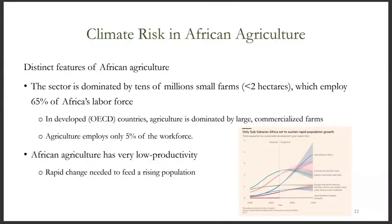Africa's agricultural sector stands out from agriculture in other parts of the world in a number of ways. First, agriculture in Africa is dominated by tens of millions of small farms, which employ 65% of the continent's labor force. By contrast, in advanced economies, agriculture is dominated by large commercial farms that employ only 5% of the workforce. A second defining feature of Africa's agriculture is its very low productivity. A rapid productivity improvement is needed to feed a rising population, which is expected to reach almost 3 billion by the year 2100.